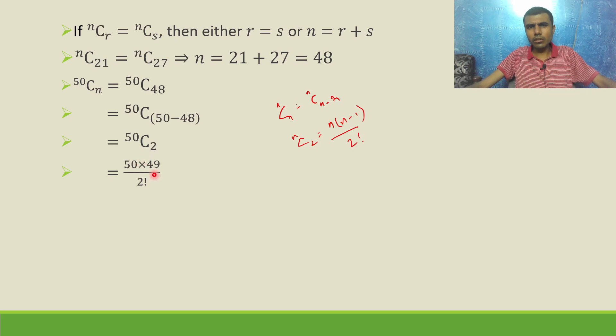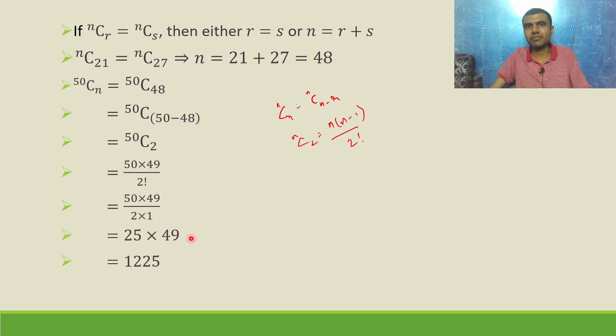So 50 × 49 / 2!. That's 50 × 49 divided by 2 × 1, which equals 25 × 49, giving us 1225. That's it. Thank you.